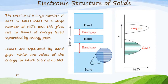When there's an overlap of a very large number of atomic orbitals in solids, this leads to a very large number of molecular orbitals, giving rise to these bands of energy levels that are separated by energy gaps. The bands can be separated by band gaps, which are values of the energy for which there are no molecular orbitals.